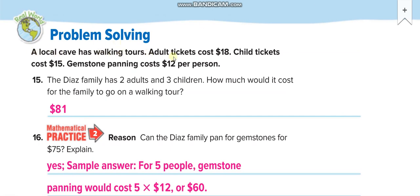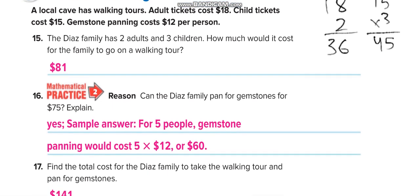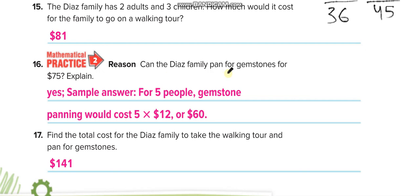A local cave has walking tours. Adult tickets cost $18, child tickets cost $15, and gemstone panning costs $12 per person. The Diaz family has 2 adults, so 2 times 18: 2 times 8 is 16, 1 up, 2 times 1 is 2, so 36. And the child ticket costs $15, they have 3 children: 15 times 3. 3 times 5 is 15, 5 here, 1 up, 3 times 1 is 3 plus 1 is 4. Then you will add both of them: 36 plus 45 is 81.